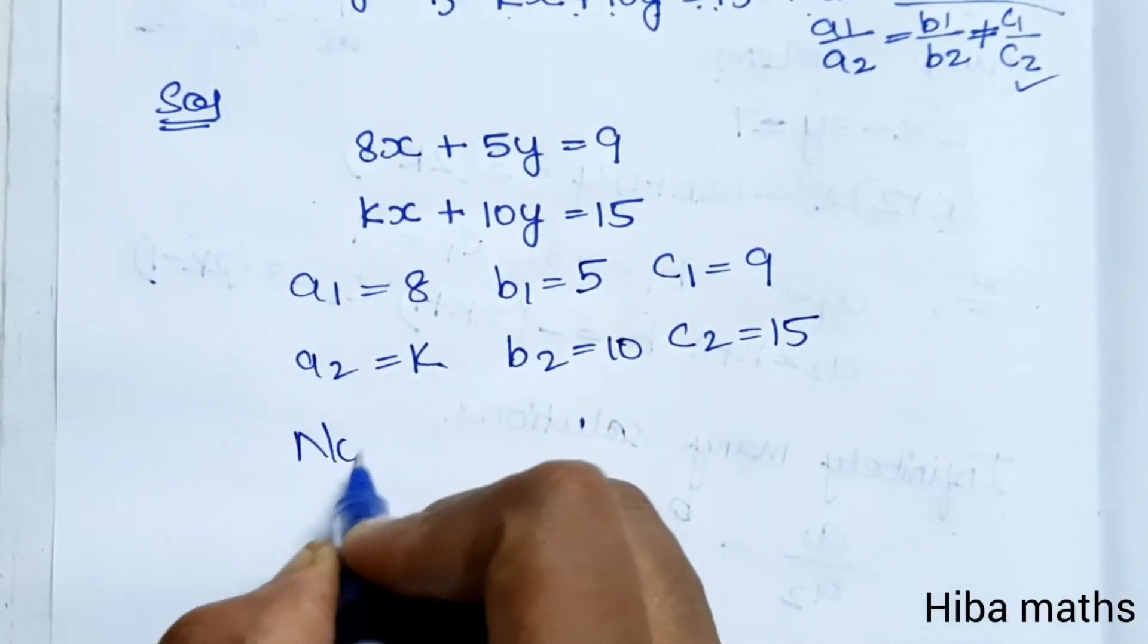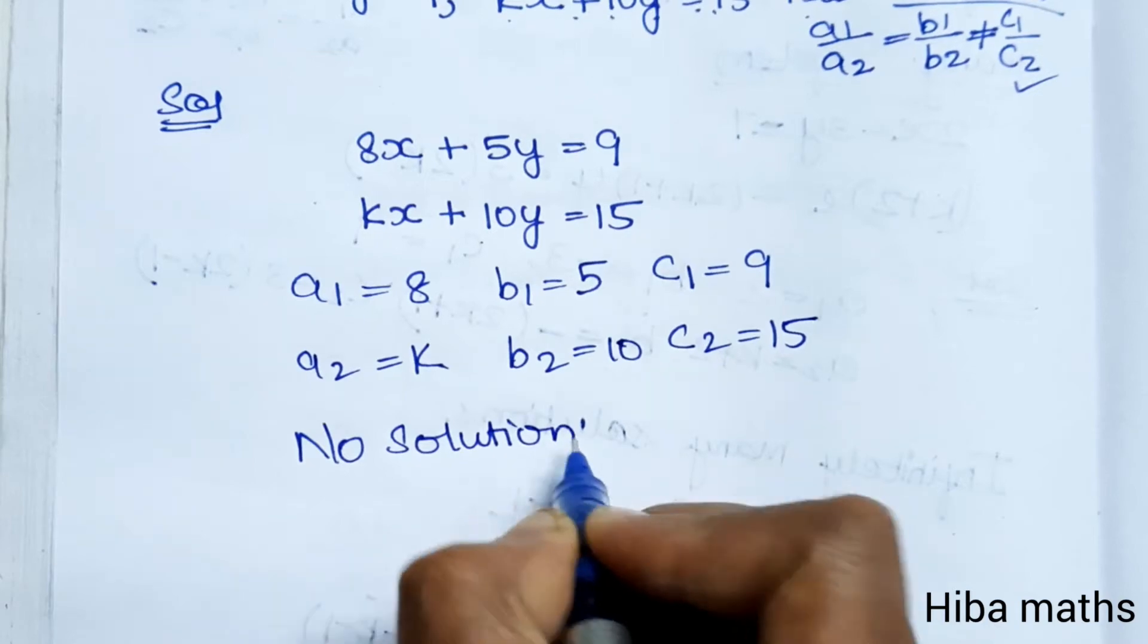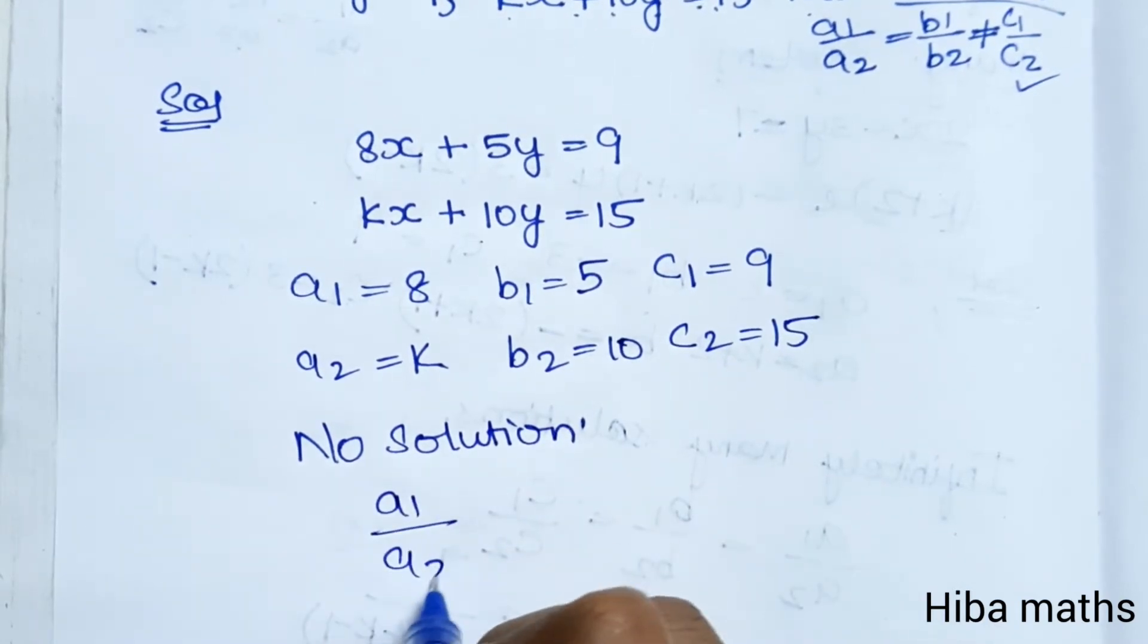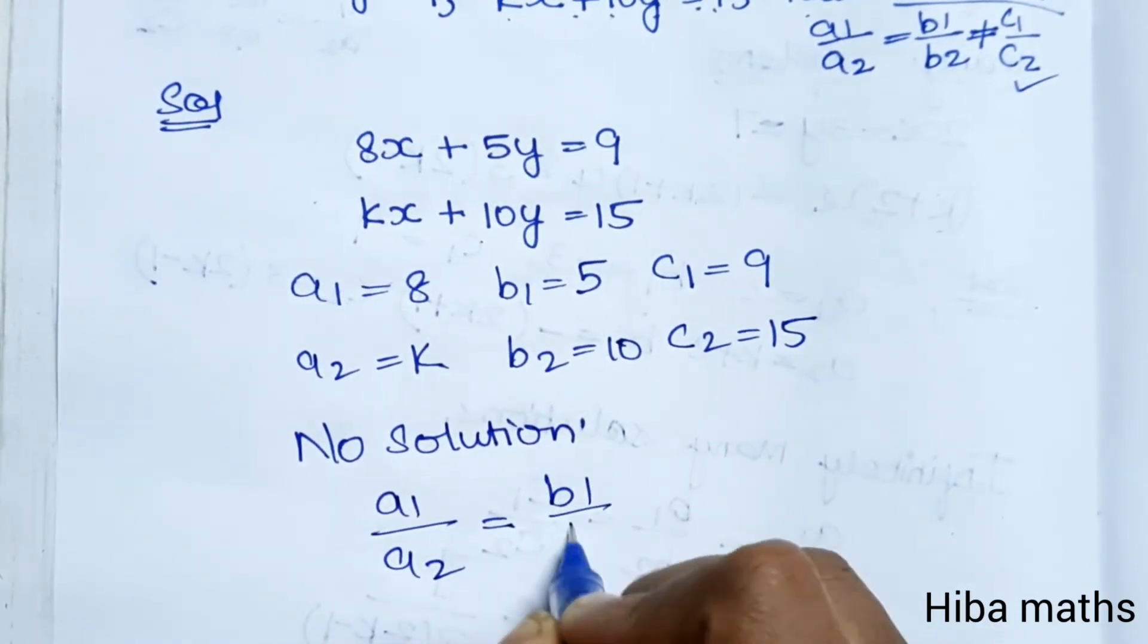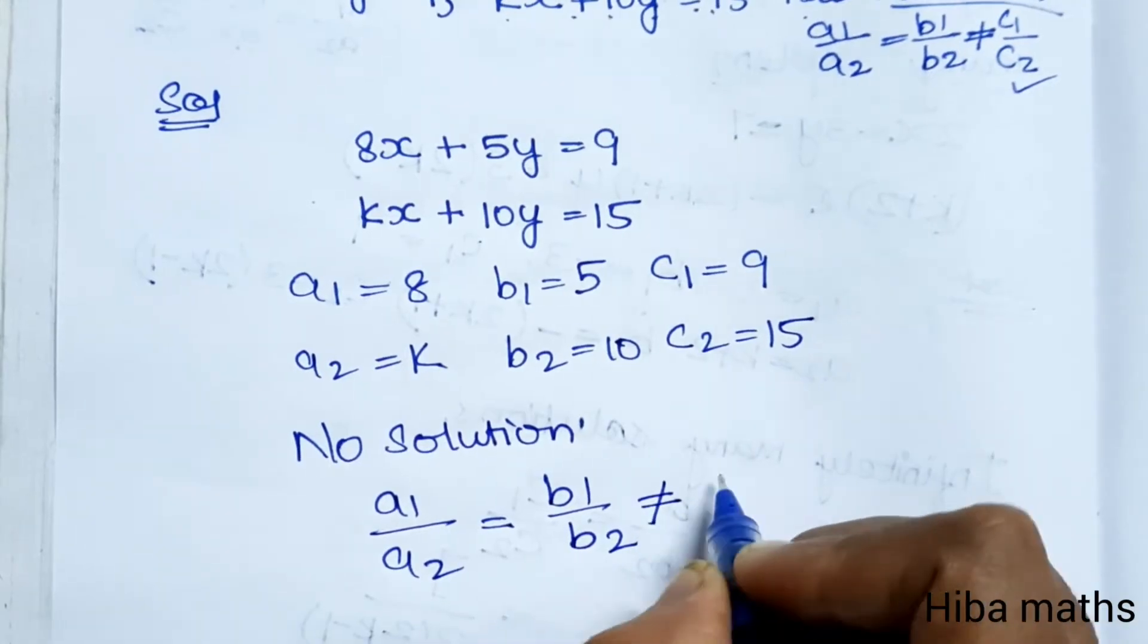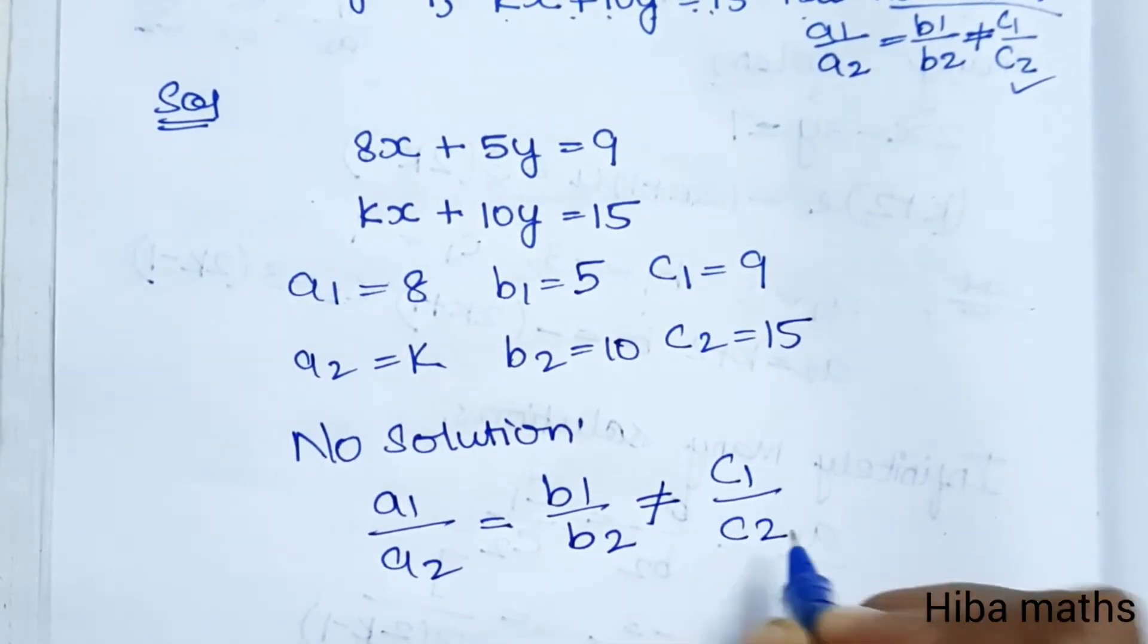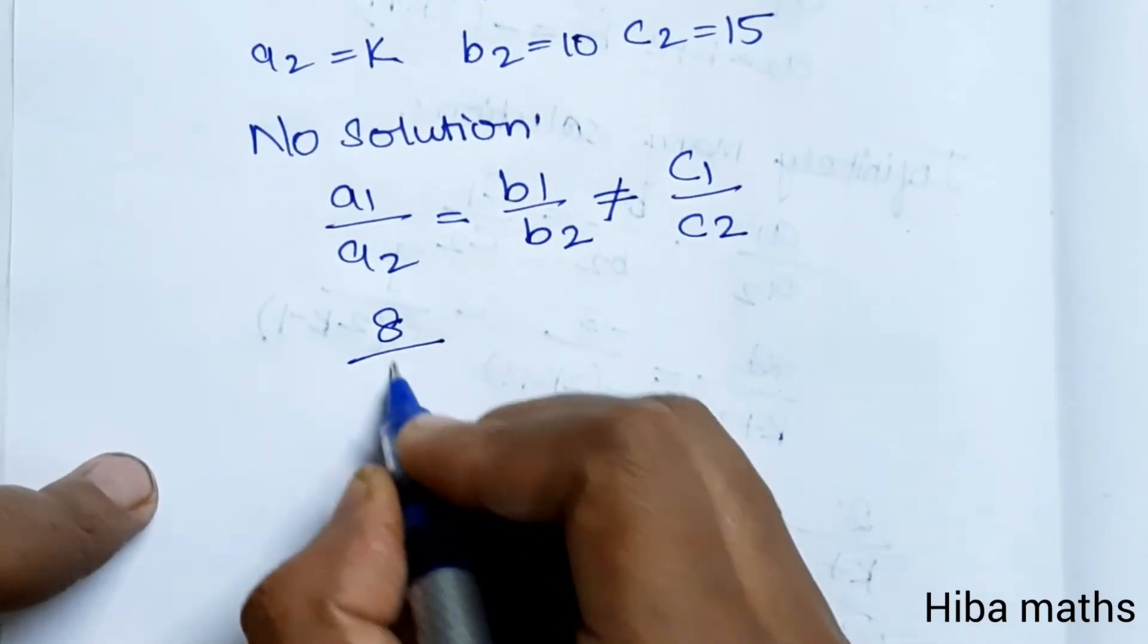For no solution, we apply the condition: a1/a2 = b1/b2 ≠ c1/c2. Substituting a1 = 8 and a2 = k.